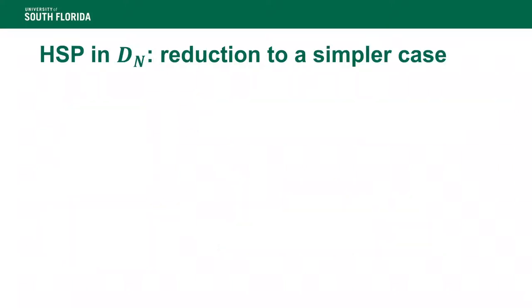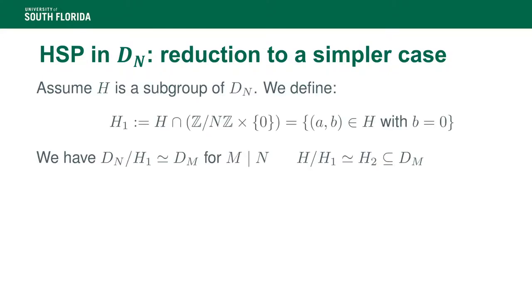For the hidden subgroup problem, we first want to reduce it to a simple case. We want to reduce the hidden subgroup problem in D_n to a case where the hidden subgroup H has a very simple shape. We define H1 as the intersection of our hidden subgroup with elements of the form (a, 0). That subgroup H1 is a subgroup of D_n; you can quotient it and prove it is isomorphic to another dihedral group D_m with M dividing N, and the shape of the hidden subgroup is H quotient by H1.